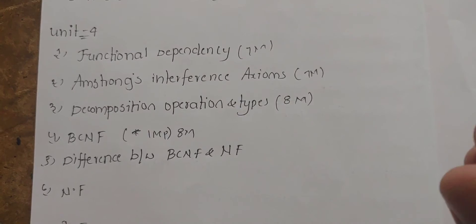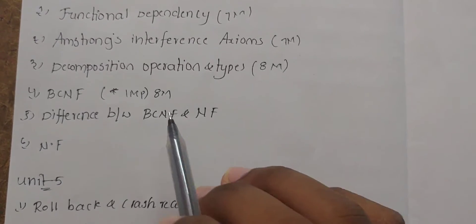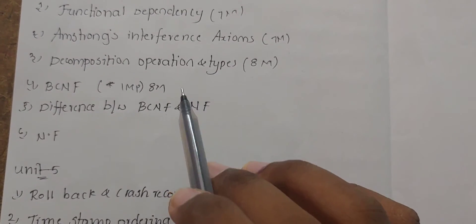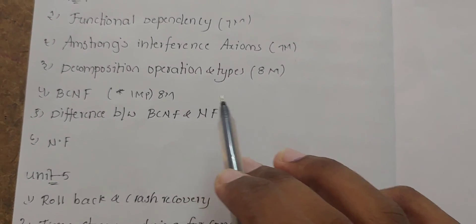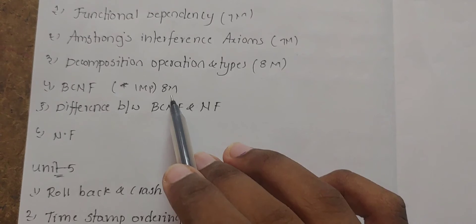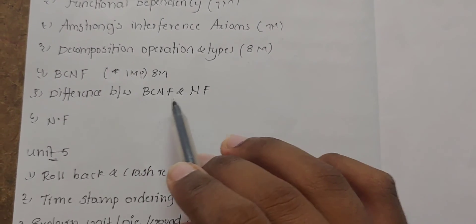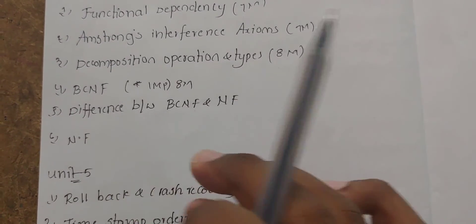BCNF. 3NF and BCNF. BCNF normal form. Differentiation into types.